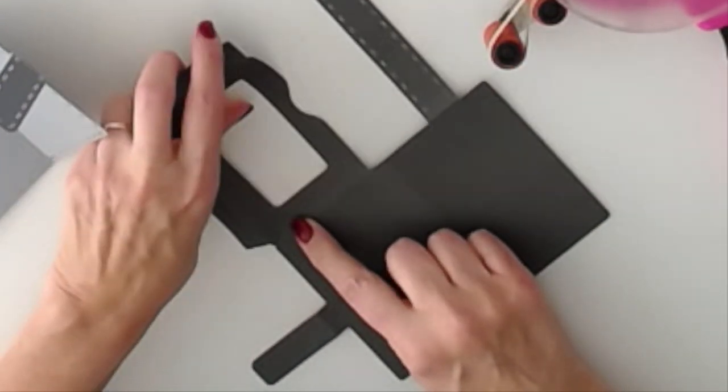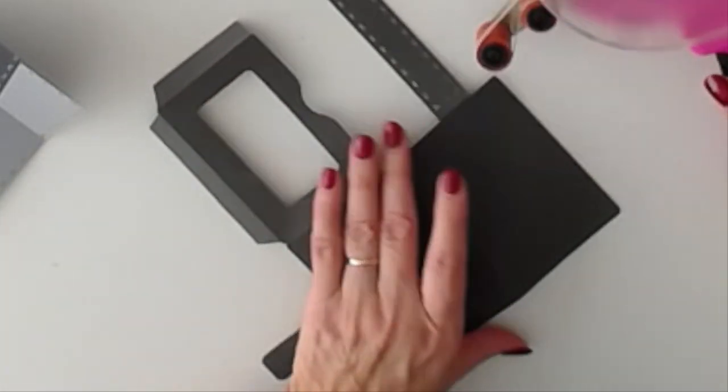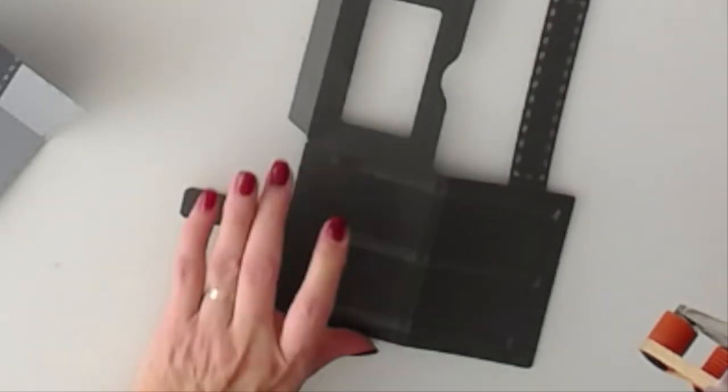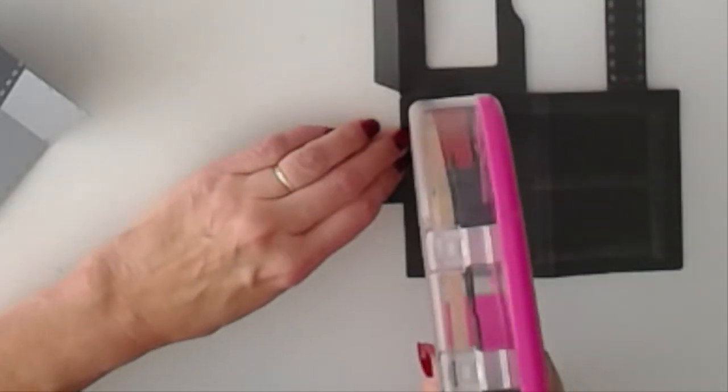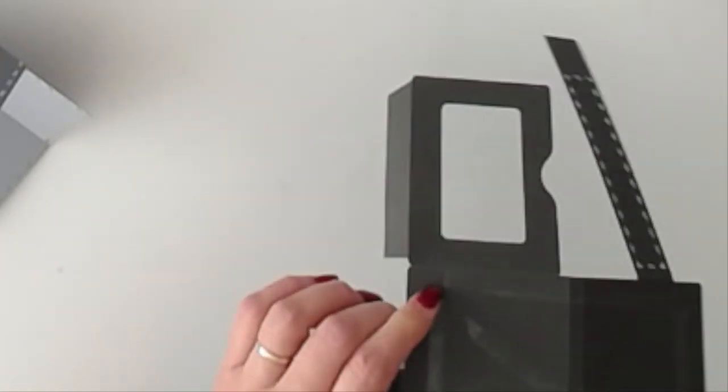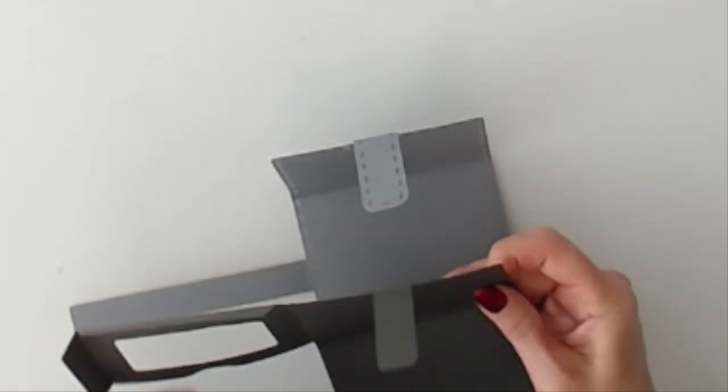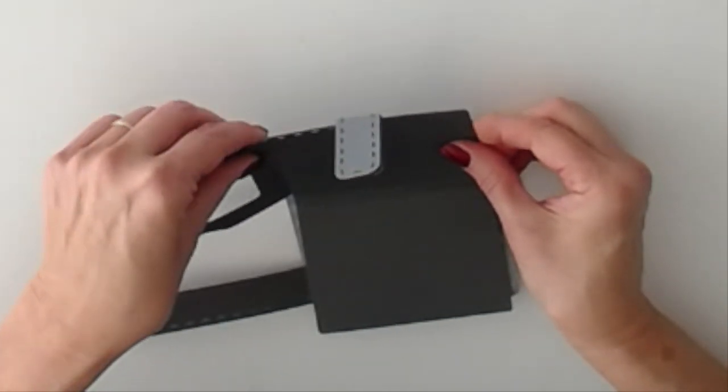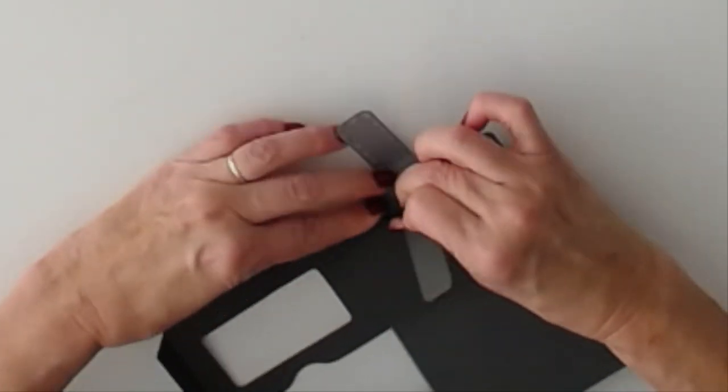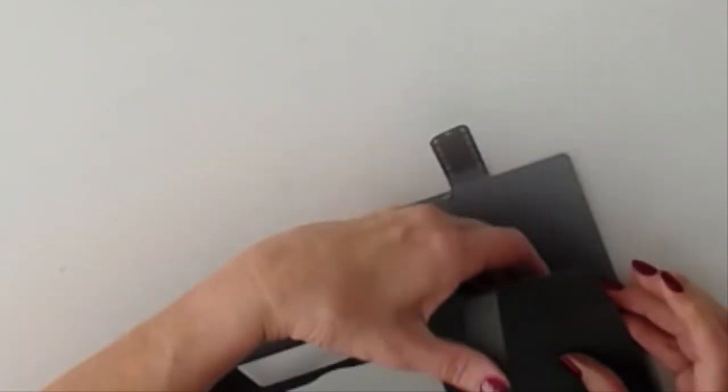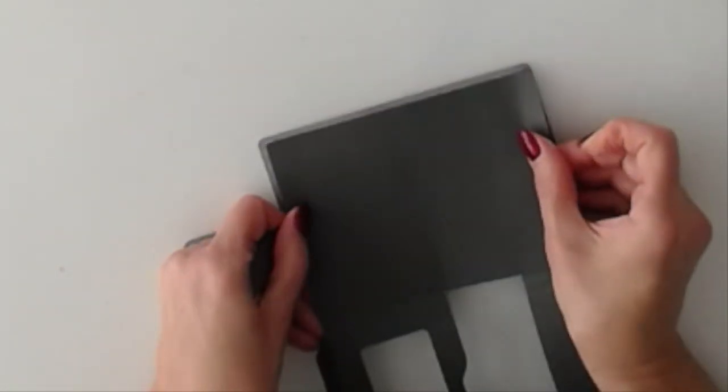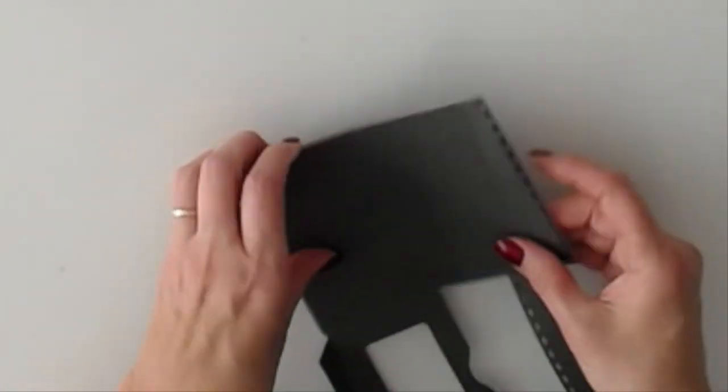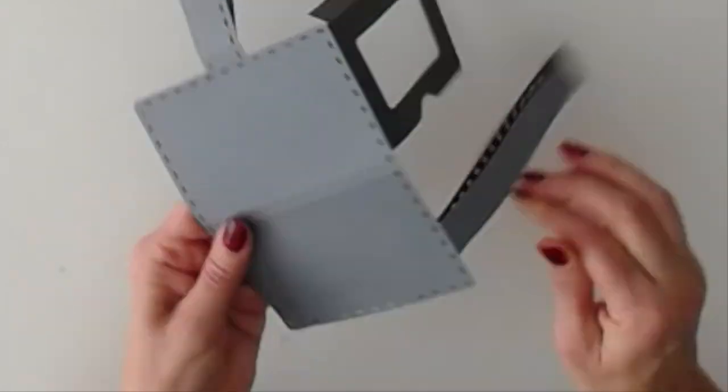So we're going to put our, start with our adhesive just on this rectangle. You don't want to put it too close to the edges because you don't want to have adhesive coming through the holes or the cutouts on the outside. And we want to line this up nice. That looks good.